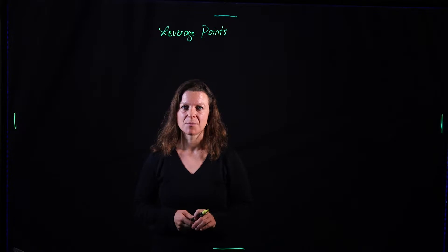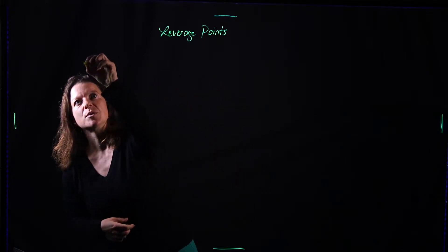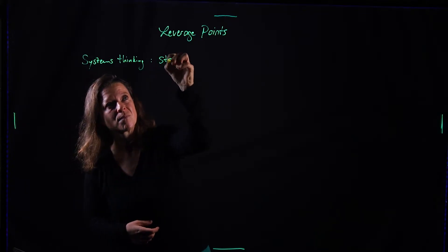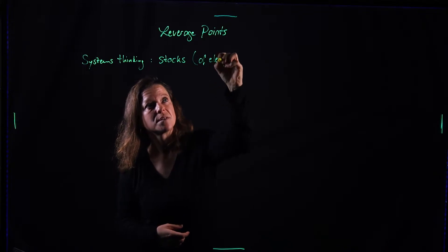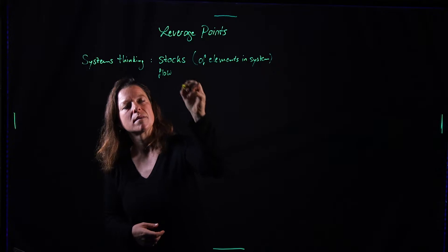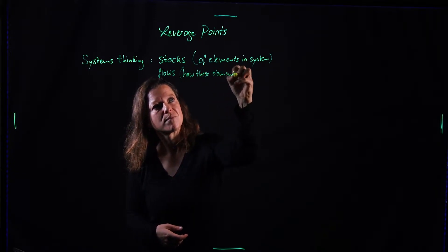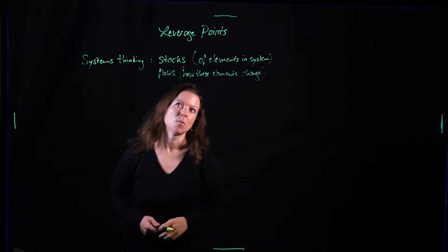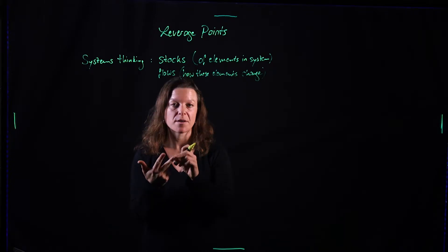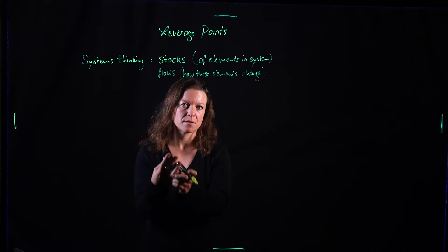When we use as an example a company, then a company has people working there, that is one of their stocks. In systems thinking, we often talk about stocks and flows. The stocks are elements in a system, and flows are how these elements move or change. When we talk about this company, employees are one stock, the money that they earn is another stock, the products that the company manufactures is a stock, the infrastructure assets that a company has like buildings, vehicles and so on. Those are stocks.